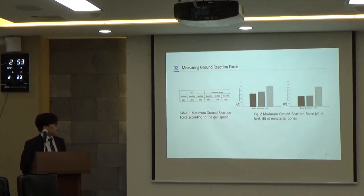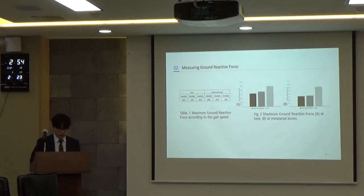Table 1 and figure 2 show the average maximum ground reaction force according to the gait speed. At heel, 2 km per hour has 635.5 newtons, 4 km per hour has 722 newtons, and 6 km per hour has 979.5 newtons. The ground reaction force increases gradually as the gait speed increases. In the case of metatarsal bones, there is no significant difference between 2 km per hour and 4 km per hour. It seems that there is a basic ground reaction force caused by body weight, so their difference is small. 6 km per hour has 1229 newtons, which is 82% larger than 4 km per hour.